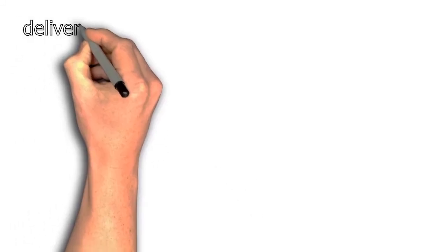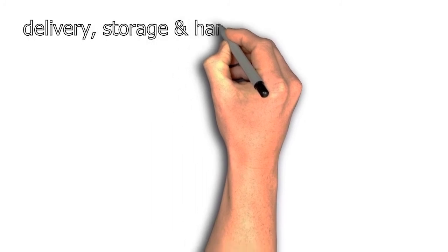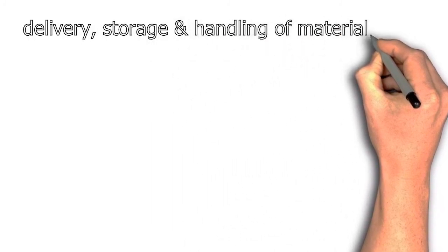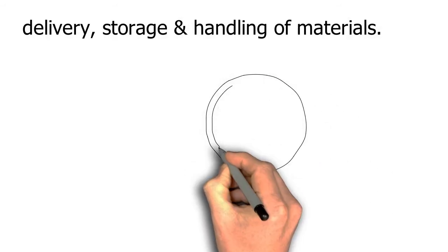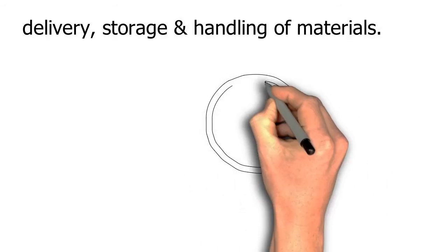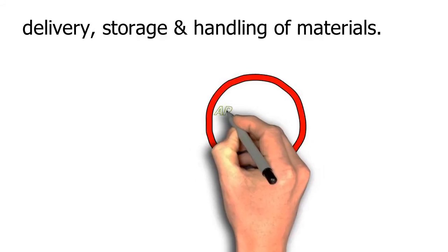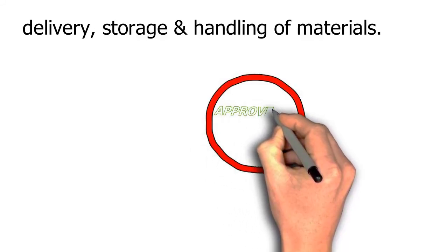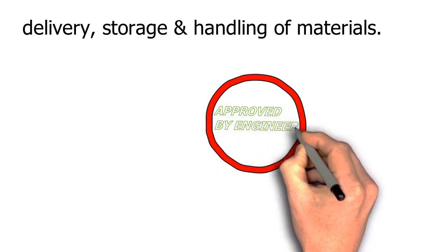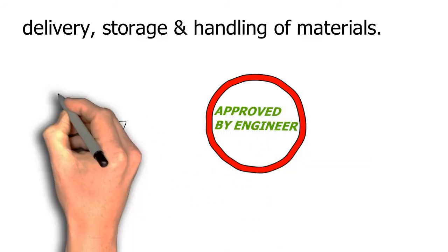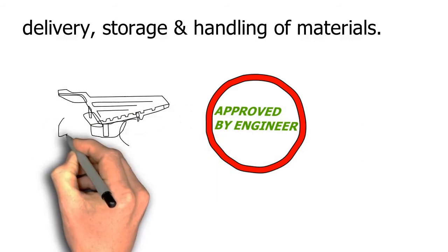Delivery, storage, and handling of materials: All materials are handled and stored in an appropriate manner to preserve their quality and fitness for the work, and approved by the engineer. Vehicles used in transporting construction materials should be kept clean and in proper working conditions to prevent the loss of materials during transportation.